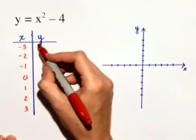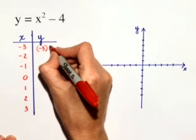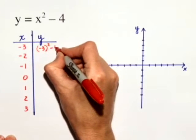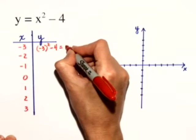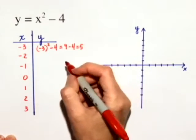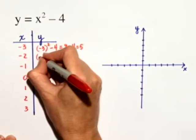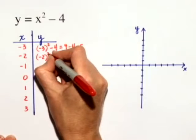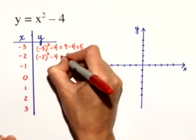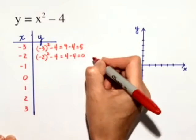When x equals negative 3, the y value will equal negative 3, that quantity squared, minus 4, which is just 9 minus 4, or 5. Now we'll substitute in negative 2. So we'll get y equals negative 2 quantity squared minus 4, which is 4 minus 4, or 0.